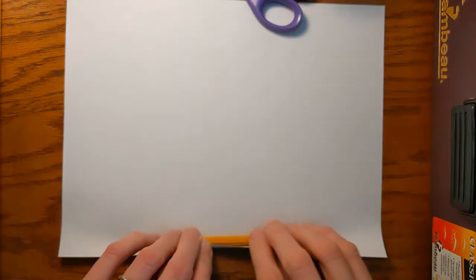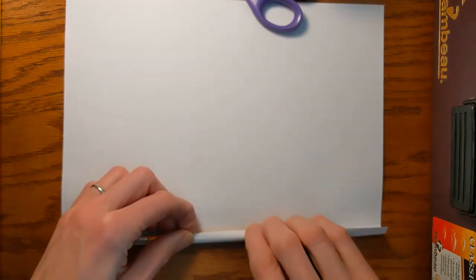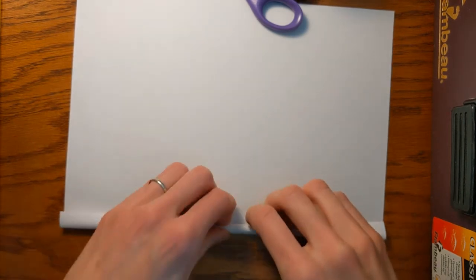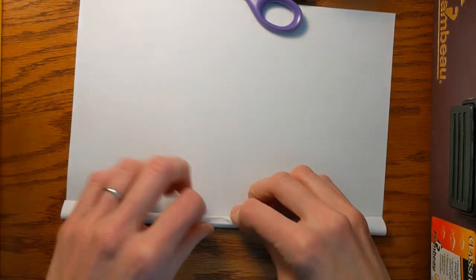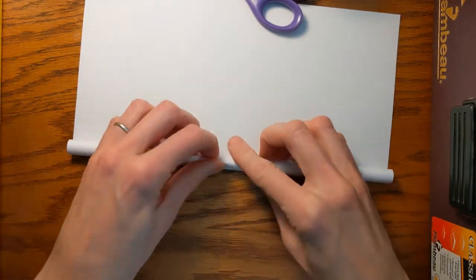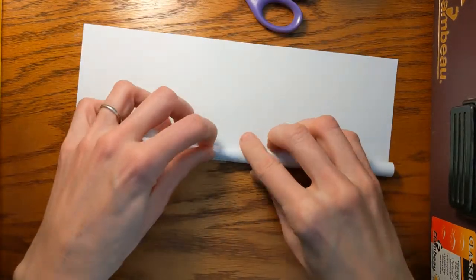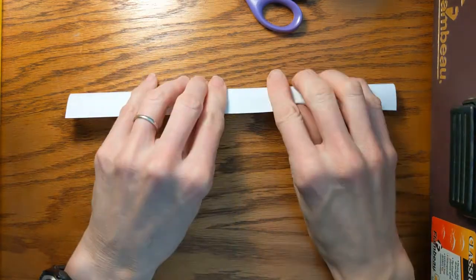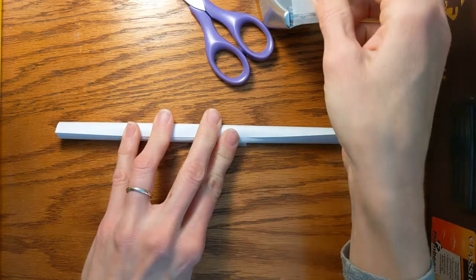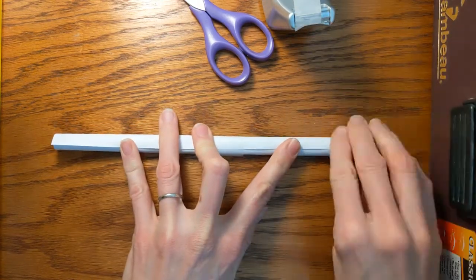First we're going to make the launcher. Take one of your pieces of paper and lay your pencil across the long side of the paper. Then roll your paper tightly around the pencil. The pencil will come out in the end. It's just there to give us the right size and shape. Roll your paper nice and tight even if it takes a few tries, but not so tight that you can't get the pencil out. Then use about three pieces of tape to seal up your tube.